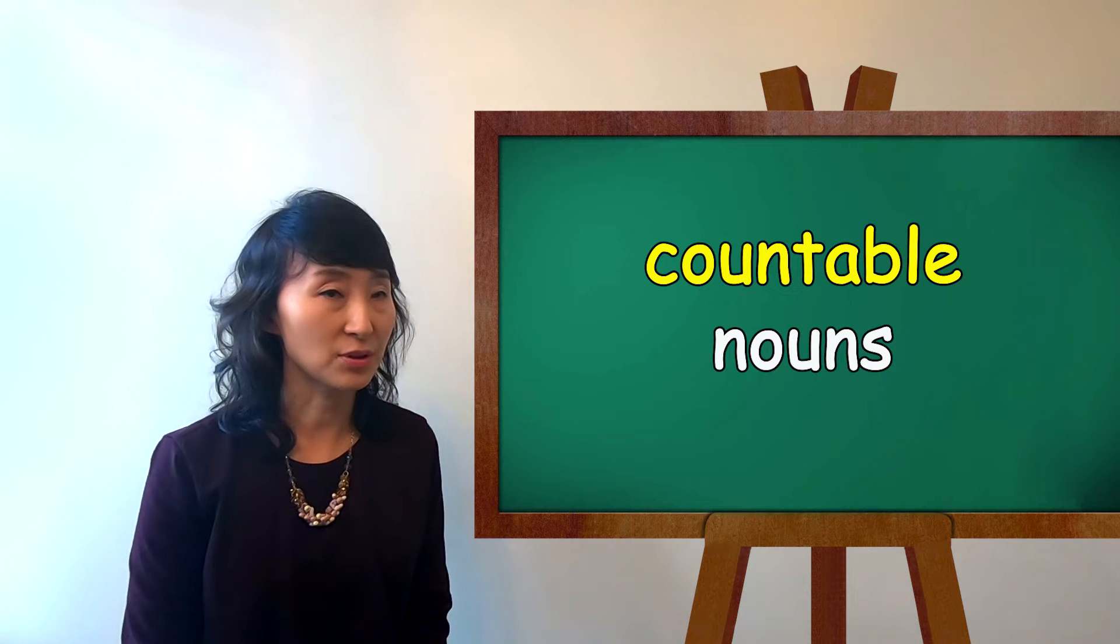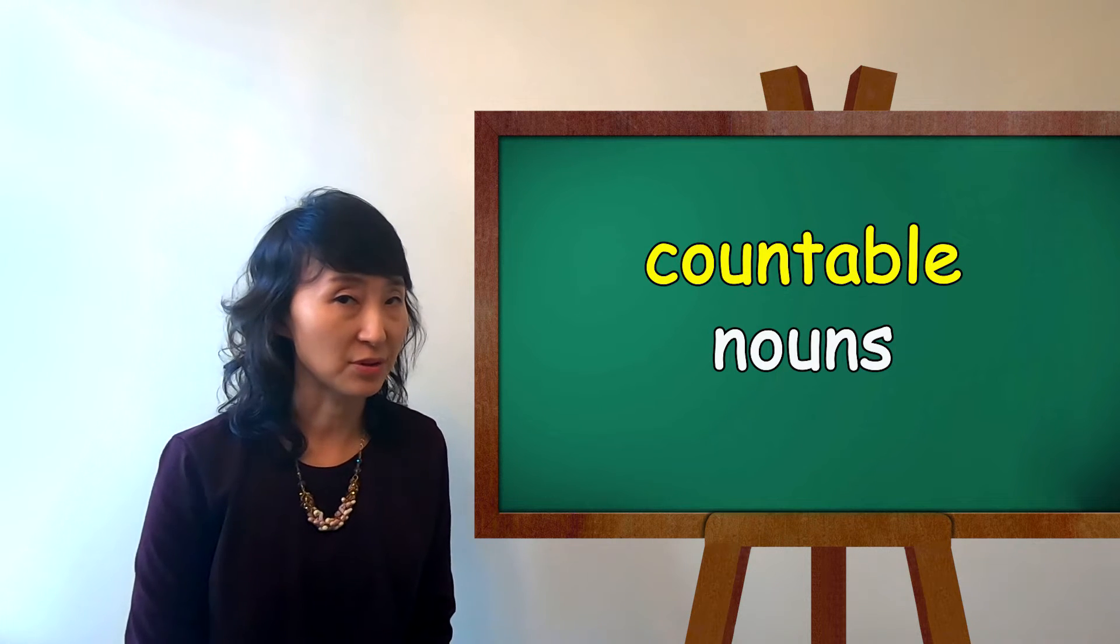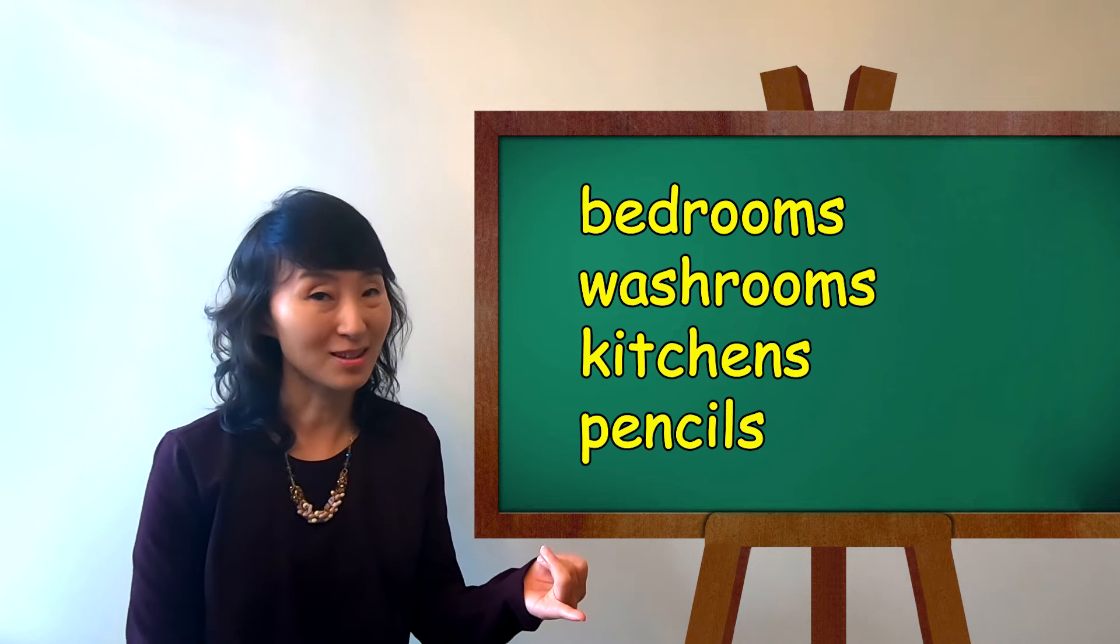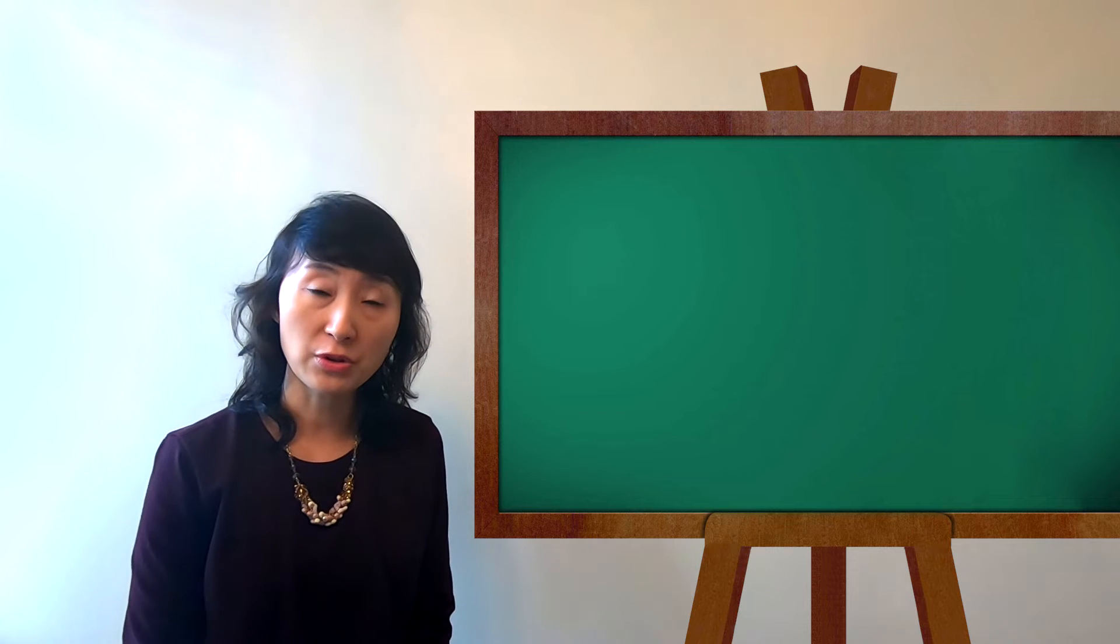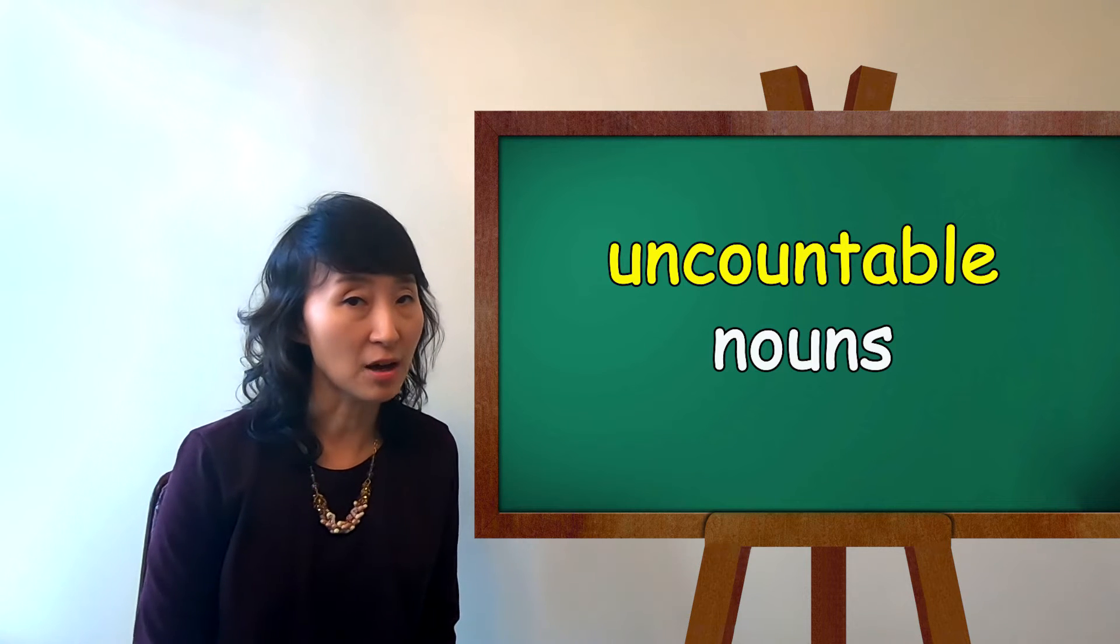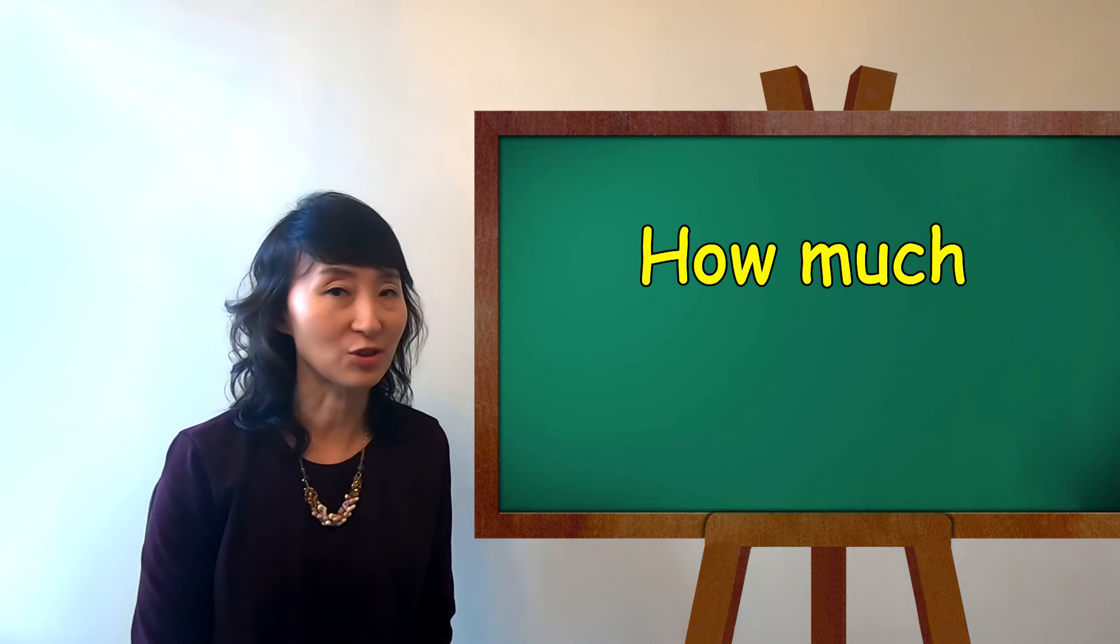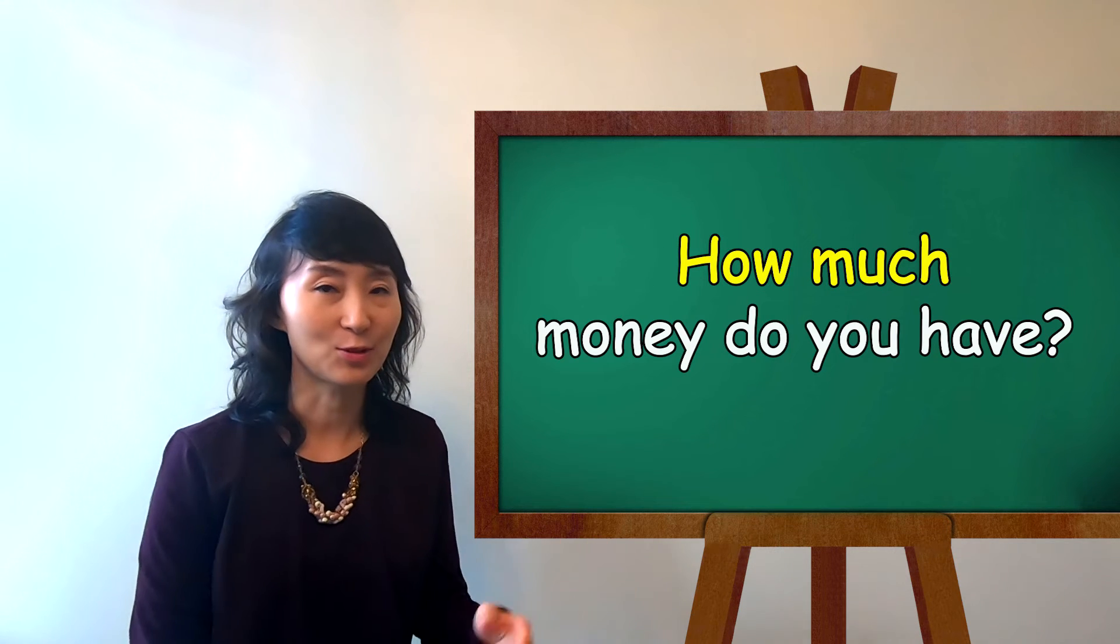And also, you are going to use countable nouns, like bedrooms, washrooms, kitchens, pencils. If you are going to use uncountable nouns, you can say how much. How much money do you have?